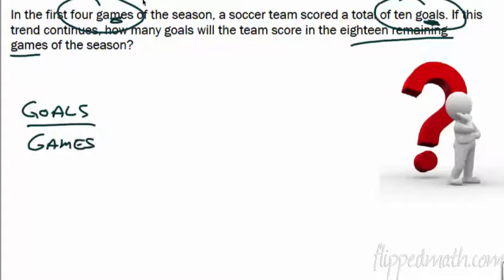All right, so in the first four games, so that little unit rate there helps you out because you know to put the 4 down here because that's the game. All right, and then they scored 10 goals. So the 10 goes up there. If this trend continues, how many goals will the team score in 18 remaining games of the season? You just put the 18 down here, okay, because it's a game. So four games, 18 games, they're in the same place. We want to know right here how many goals. So we put an x because we don't know that value.